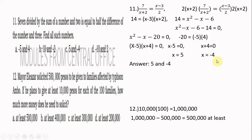Number eleven: 7 divided by the sum of a number and 2 is equal to half the difference of the number and 3. Find all numbers. The equation is 7 over (x plus 2) equals (x minus 3) over 2. The LCD of (x plus 2) and 2 is 2 times (x plus 2).